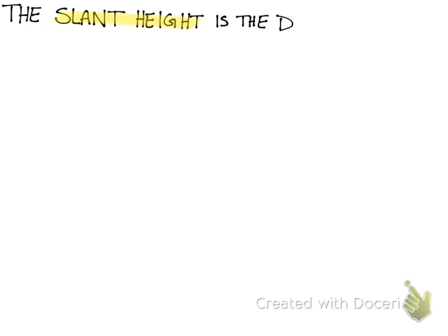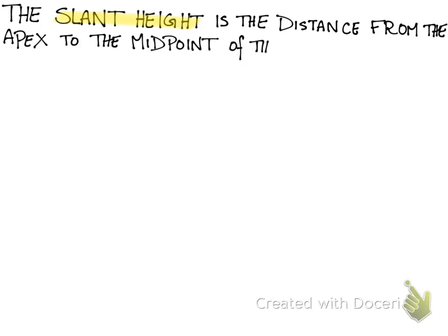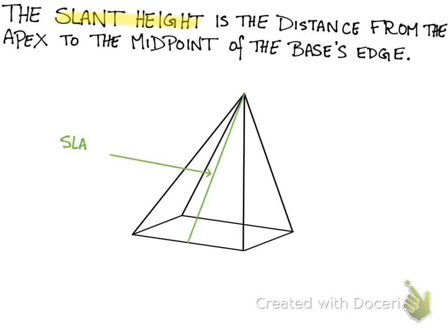The slant height is the distance from the apex to the midpoint of the base's edge. So in fact this green line, which I call the slant height, doesn't go straight down from the apex down to the base—it goes down the side of the pyramid, down one of the lateral sides, as if it was sliding down the side of this pyramid.